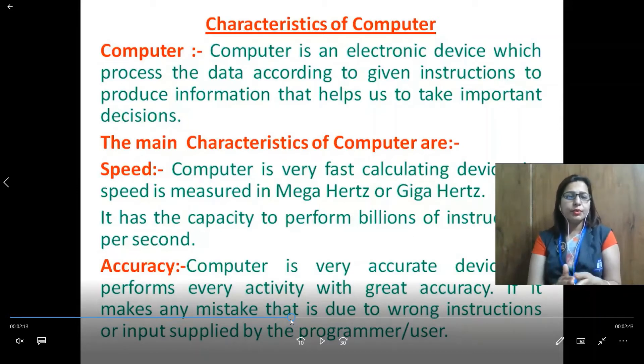Accuracy. Computer is very accurate device. If the user or the programmer gives wrong instructions then it gives wrong result. Otherwise, 101 percent computers give accurate result. It performs every activity with great accuracy. If it makes any mistake that is due to wrong instructions or input supplied by the programmer or user.